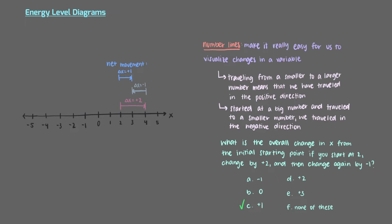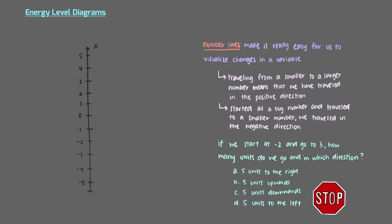We can do the same thing even if we orient our number line vertically. If we start at negative 2 and go to 3, how many units do we go and in which direction? We are moving in the positive direction in this example. Because we have now oriented our number line vertically, the positive direction is now upwards. So we've moved plus 5 units.